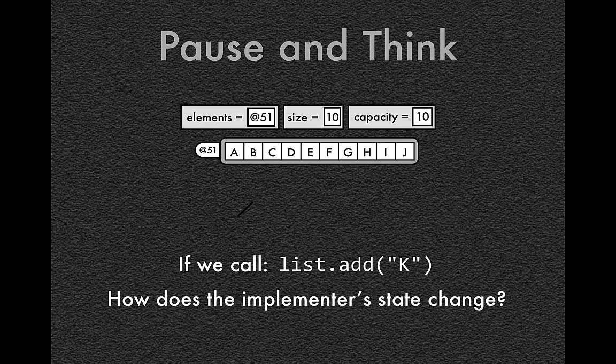First we double the capacity. So the capacity becomes 20. Alright, next we create a brand new array of length capacity. In this case that's 20, whose first 10 elements are duplicated from the original array. And that's going to look like this.